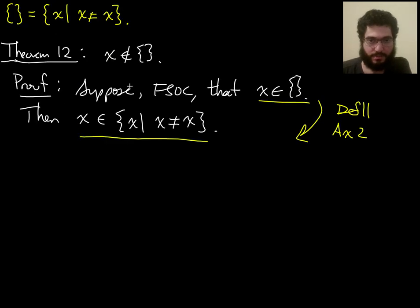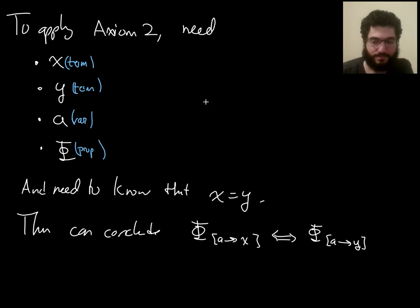Okay, so back to what we were doing here. I want to go from x in the empty set to x in this thing, which I know is equal to the empty set. So what's going to play the role of x and y here is the two things that I know are equal, the empty set and this thing that definition 11 tells me is what the empty set is.